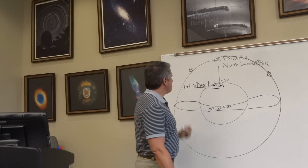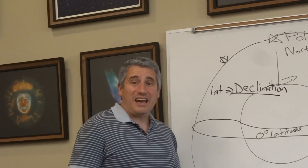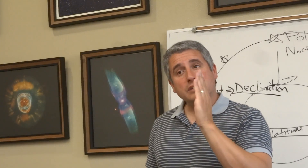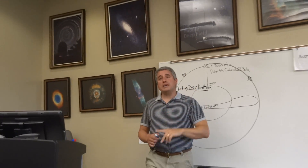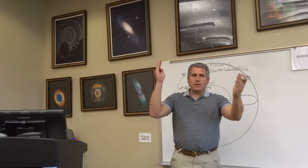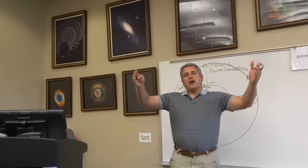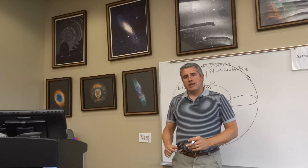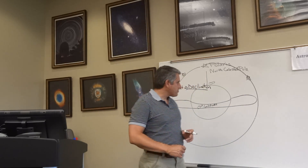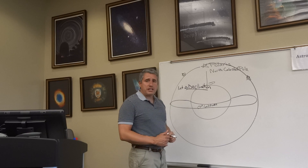Zero degrees of declination splits the sky in half — literally, the sky is sliced in half. Zero degrees is the Earth's equator projected into space. Every line above and below that — 10, 20, 30, 40, 50, 60 degrees — are lines of celestial latitude, or as I discussed, declination. These lines run east to west projected off the Earth. So latitude becomes declination.